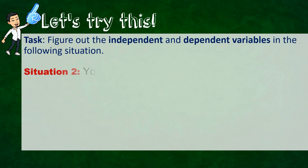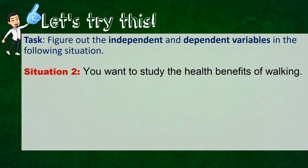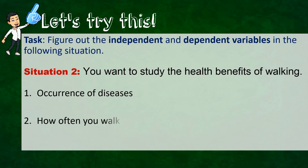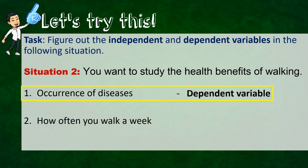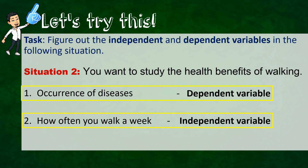Another situation: you want to study the health benefits of walking. We have the variables: occurrence of diseases and how often you walk per week. So our independent variable is how often you walk per week, and the dependent variable is the occurrence of diseases, because the number of times you walk affects the occurrence of diseases in your body. That's why it is the dependent variable.